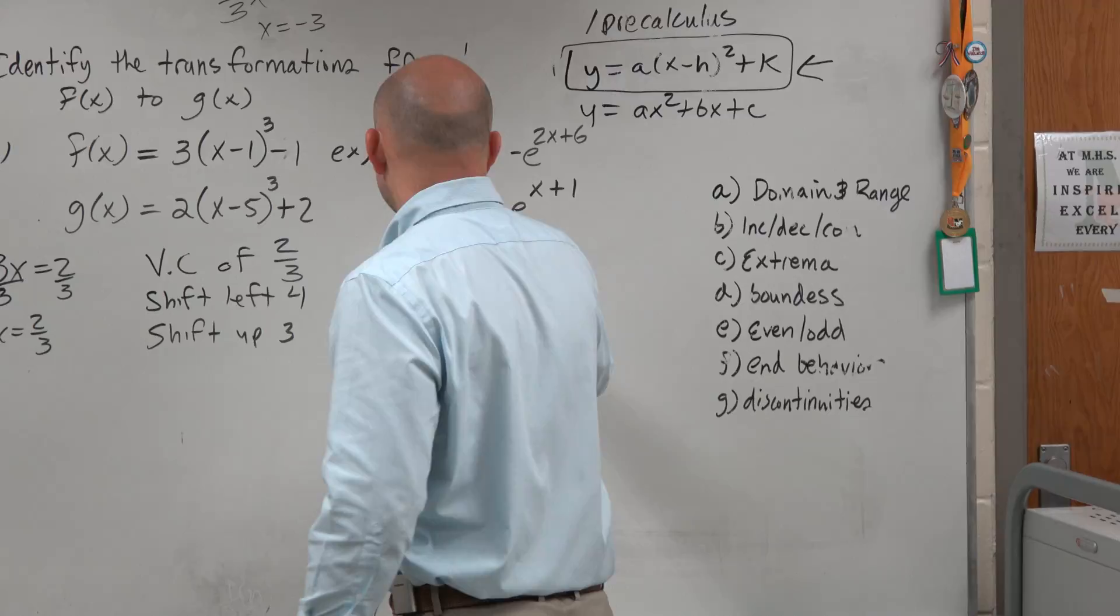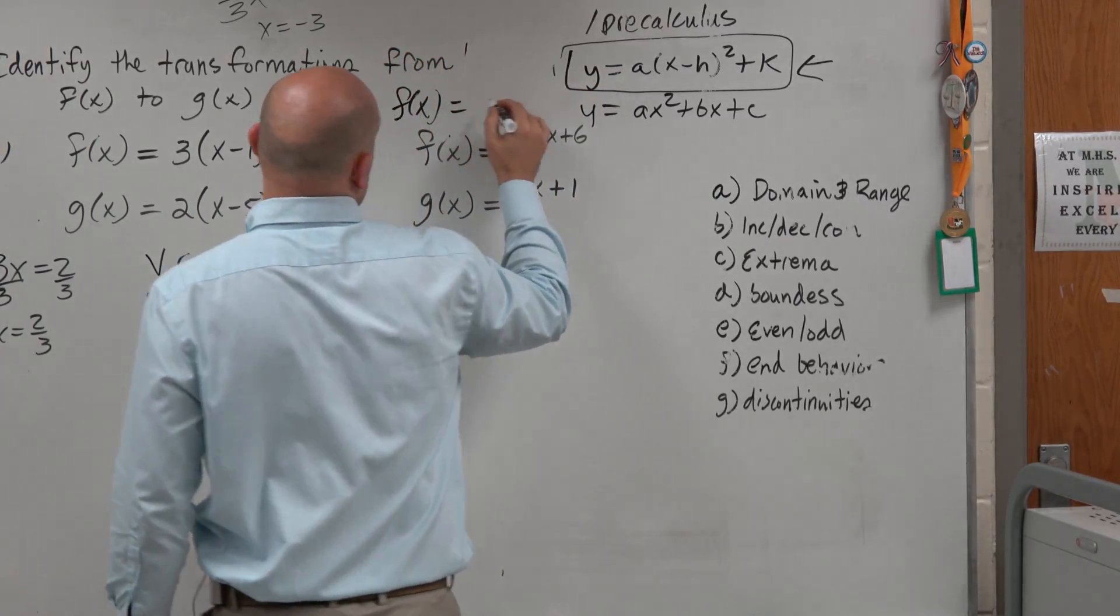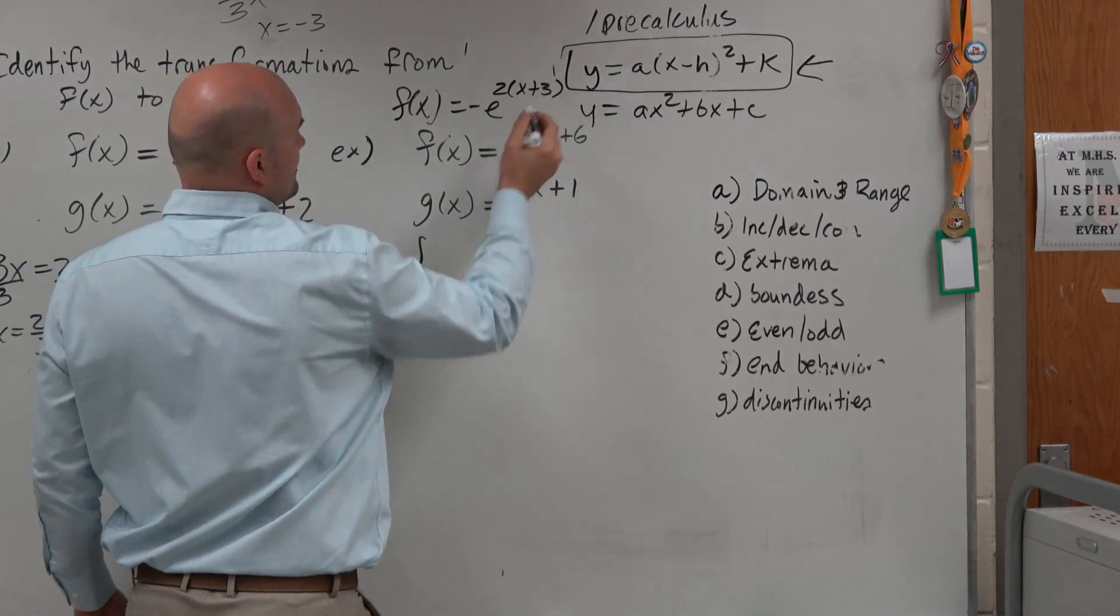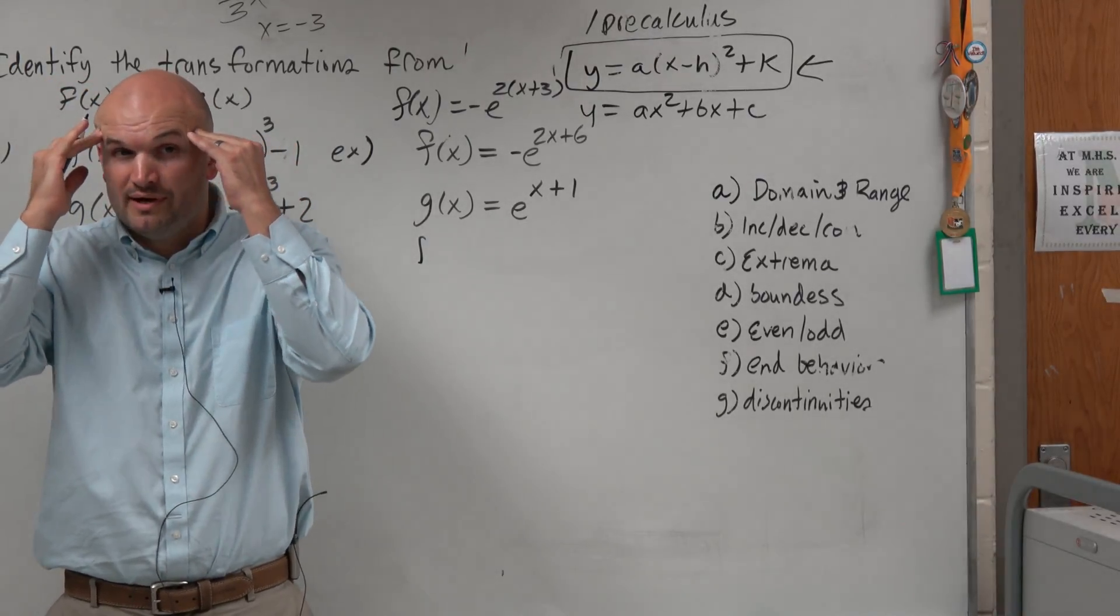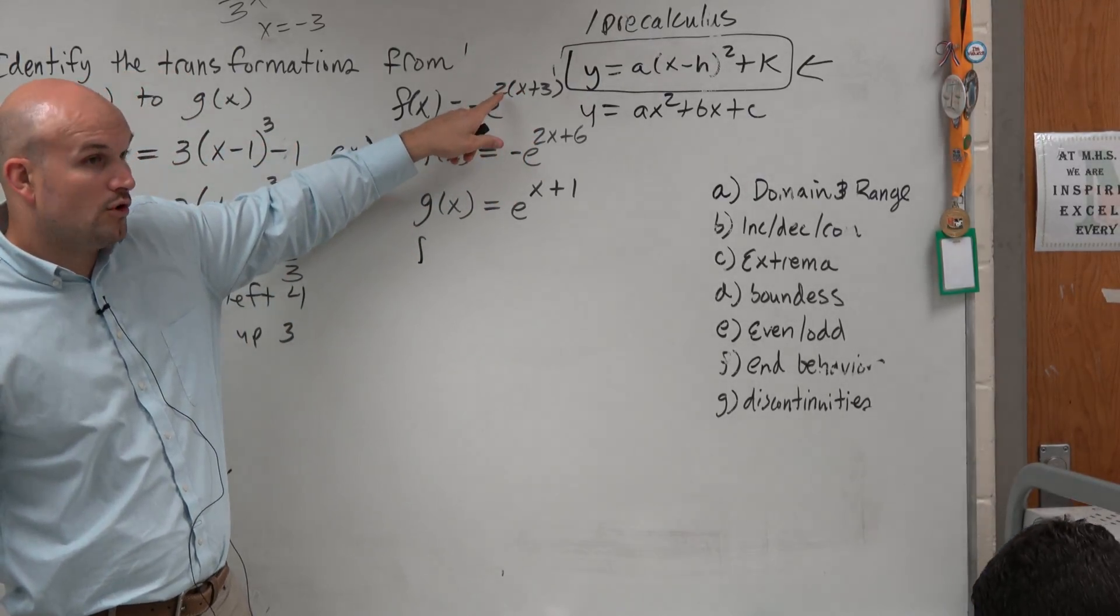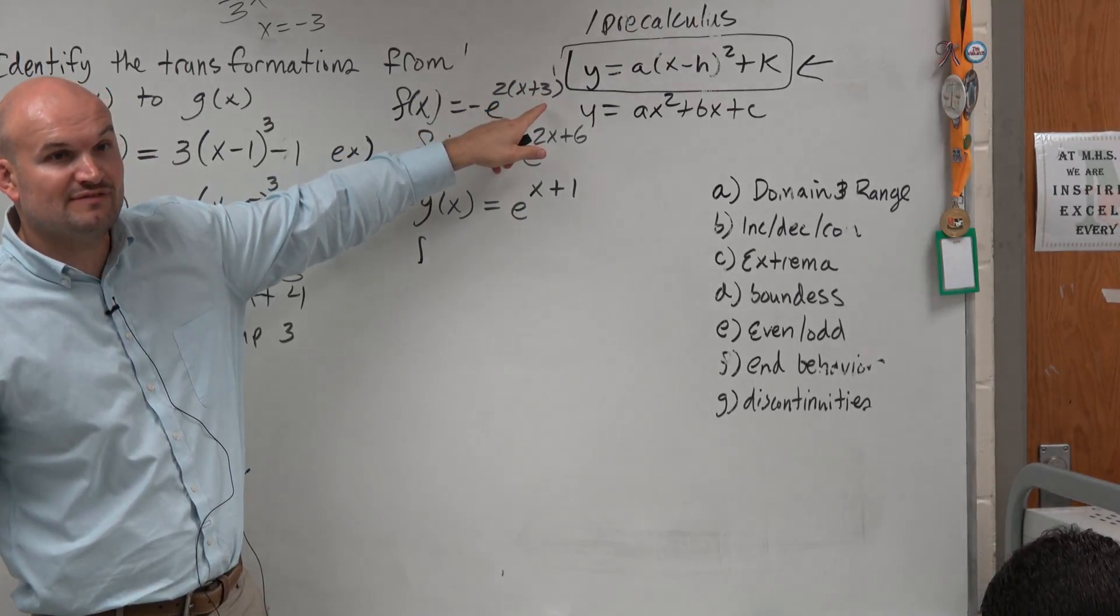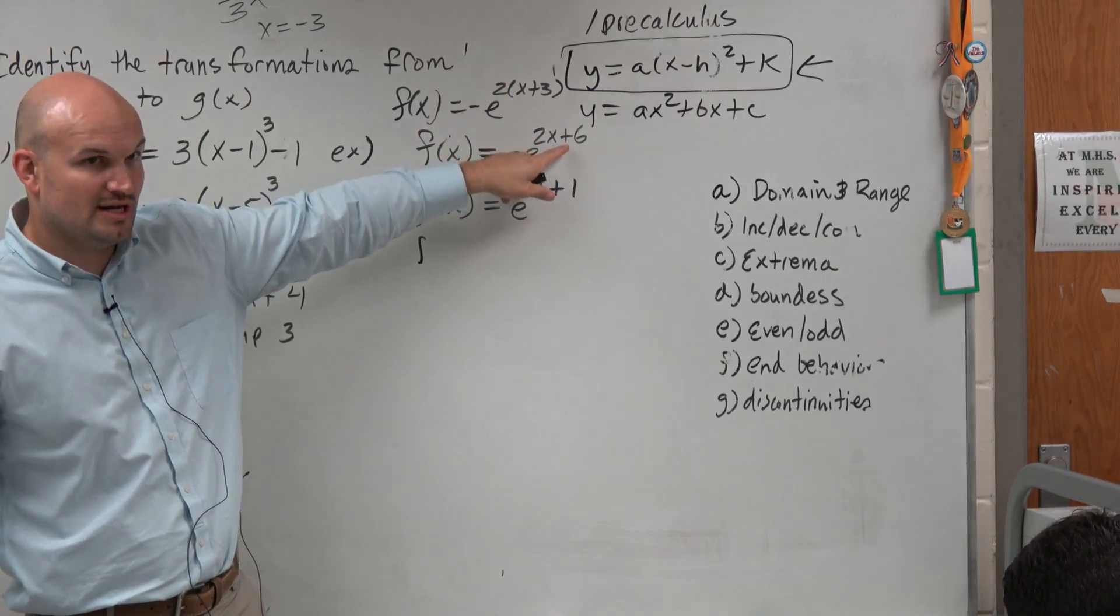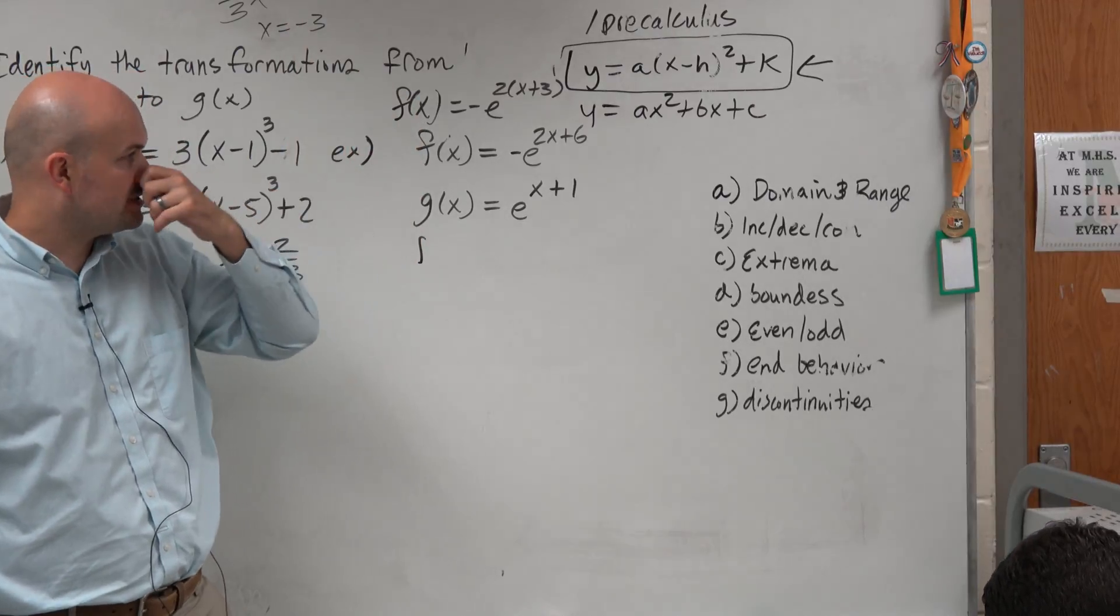So I'm going to rewrite f of... let's rewrite this as negative e to the 2(x plus 3). The reason why I want to do that is because now I have a better visual of what's going on. I have a horizontal compression of 2 and a horizontal shift of 3 units to the left. That's not as obvious by looking at it that way. So that's why understanding that factor is so important.